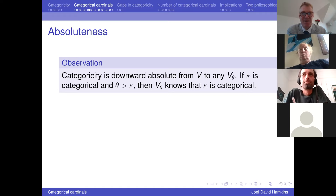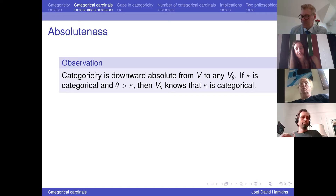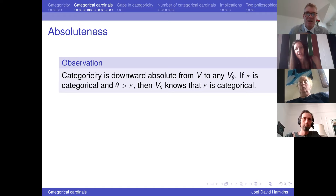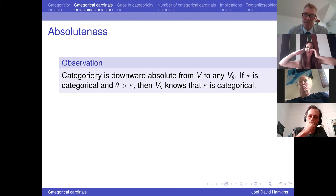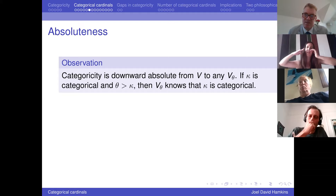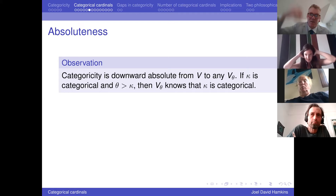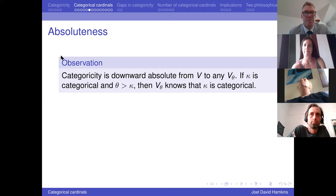Let's make some easy observations. Categoricity is downward absolute from V to any V_theta: if kappa is categorical, that means V_kappa satisfies a sentence or theory that only it satisfies. V_theta can observe that V_kappa satisfies that sentence, and V_theta will think it's the only one because it really is the only one even outside V_theta. So that gets you downward absoluteness. There are fewer challenges to categoricity inside V_theta than in V — in V, being categorical means winning against all V_lambdas where lambda is bigger than theta too.